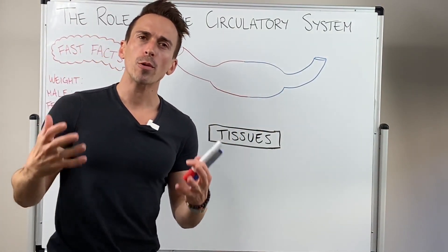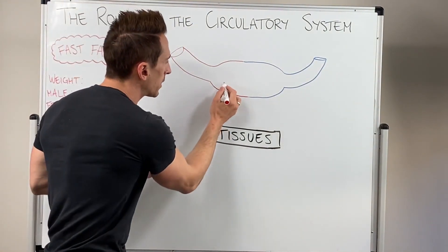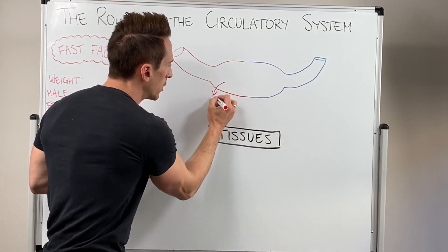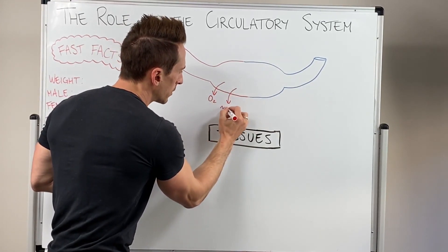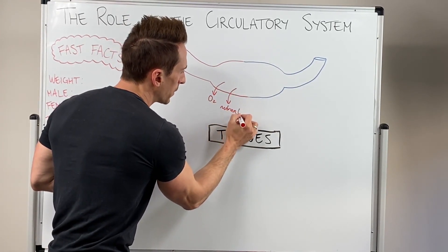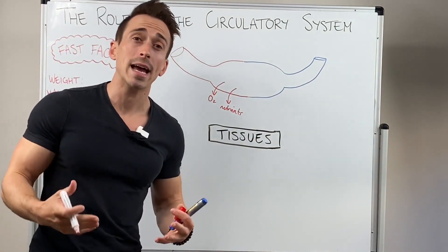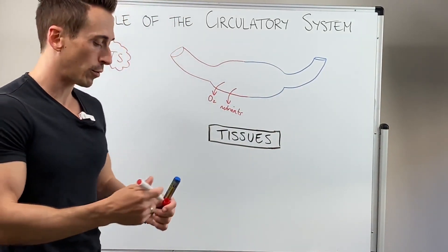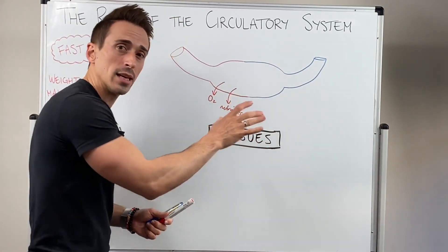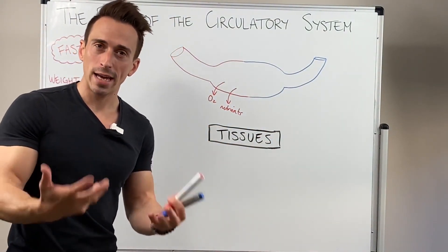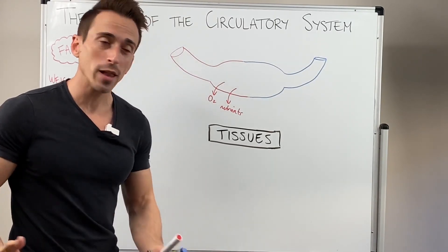Now what's the primary role of the circulatory system? Well simply put it's to deliver things such as oxygen and nutrients to the tissues of our body. Now nutrients can include glucose, it can be fatty acids, it can be amino acids for example. And what the tissues do is they take these and they utilise them to produce energy and as the building blocks for growth and development.